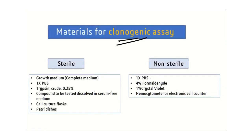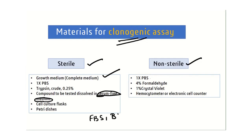In the clonogenic assay, we use both sterile and non-sterile materials. Sterile materials include growth medium with serum and serum-free medium without serum. The serum can be fetal bovine serum or BSA, which is bovine serum albumin. We also use cell culture flasks, petri dishes, and trypsin at 0.25%. Non-sterile materials include PBS, formaldehyde, crystal violet, and a hemocytometer or electronic cell counter.